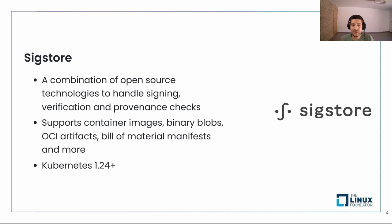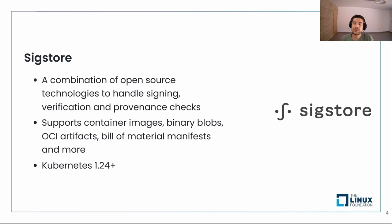We can sign almost everything — it's not just container images. It's everything stored in an OCI registry, binary blobs, software bill of materials, and many more. We're seeing a lot of increasing adoption for Sigstore in the open source community. Even Kubernetes itself started signing their own artifacts starting in version 1.24.